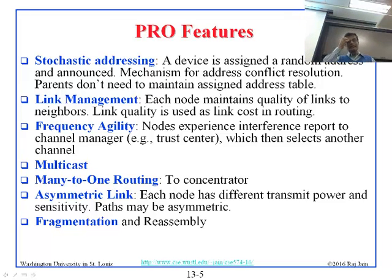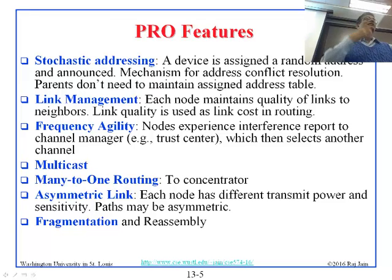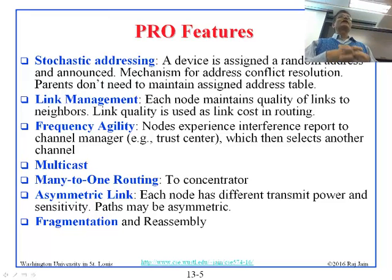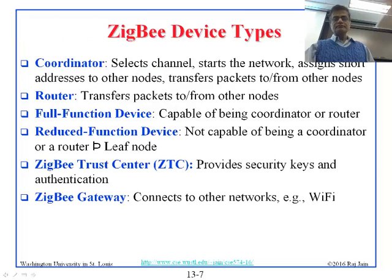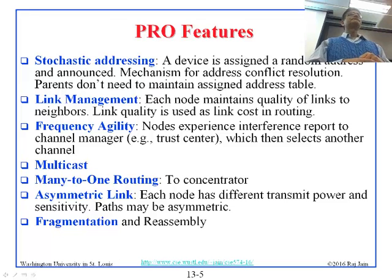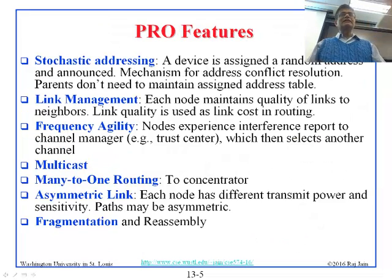Asymmetric links are supported — each node has different transmit power and sensitivity, so the cost from one node to another may differ from the reverse direction. Depending on battery level, you may not have enough power to communicate both ways equally. ZigBee Pro refers to the latest version features, while the previous standard features are from earlier versions. ZigBee has many versions, just like Bluetooth has versions 2, 3, 4, and up to 4.3 — ZigBee Pro features are the latest additions.